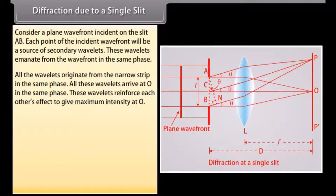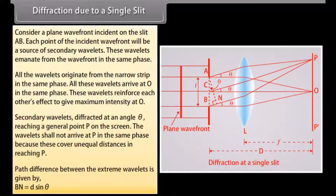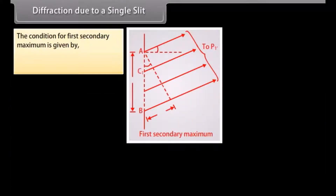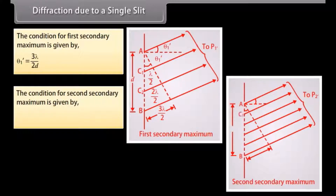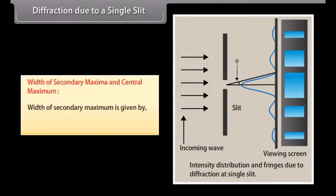Consider the formation of secondary minima and maxima. Secondary wavelets diffracted at angle theta reach a general point P on the screen, but they do not arrive in the same phase because they cover unequal distances. The path difference between extreme wavelets is BN = d sin θ. The condition for first secondary maximum is at angle = 3λ/2d, for second secondary maximum at angle = 5λ/2d, and for the nth maximum at angle = (2n+1)λ/2d.